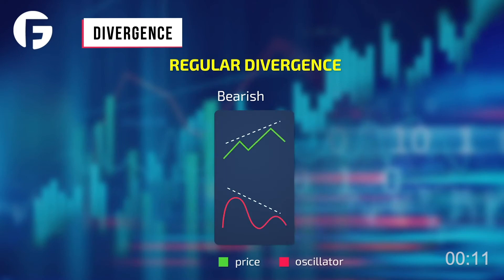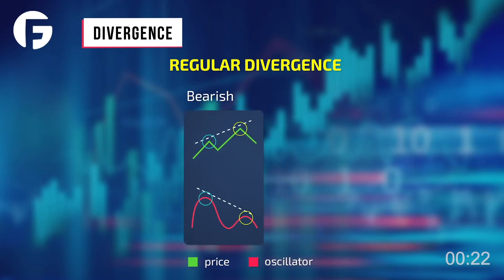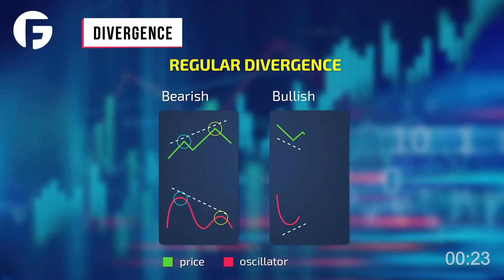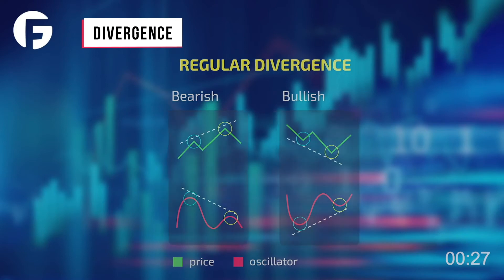Types of Divergence. First, Classical Divergence, which has two variations. Bearish Divergence, which is when the new peak of the price is above the previous peak and the oscillator is below the previous maximum. Bullish Divergence, where the new price peak is below the previous maximum, while the oscillator on the contrary is at a new maximum.